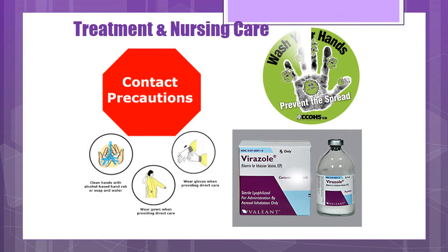For treatment and nursing care, care should be assigned to a nurse who is not caring for immunocompromised patients or those at high risk for adverse response to RSV infection. Strict infection control techniques and contact isolation should be adhered to to prevent the spread of infection. Frequent hand washing is a must before, during, and after patient contact. Follow your isolation precautions for equipment. Educate family members on infection control technique, proper hand washing, and oxygen therapy.